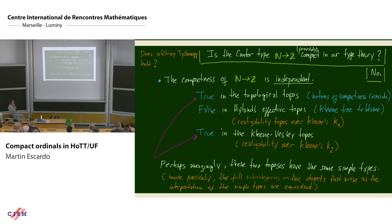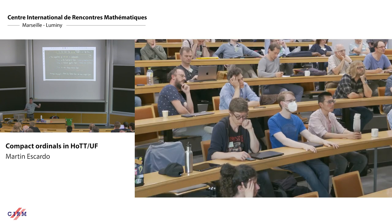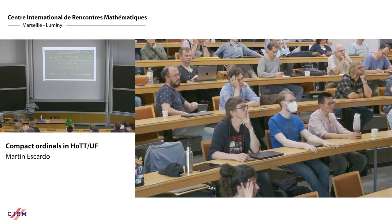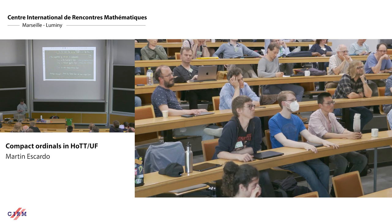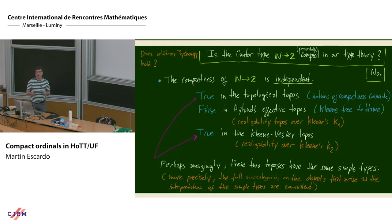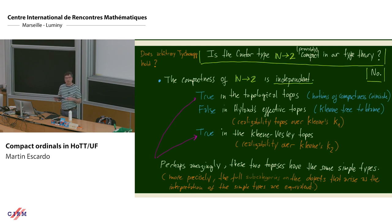As a side remark: you can consider the simple types in the realizability topos over K2 or over the topological topos — one built out of topology, the other out of computation — but the categories of simple types of these two toposes are equivalent. I consider this some kind of magic, but there is an explanation: a paper by John Longley called 'On the Ubiquity of Certain Type Structures' shows that in lots of categories if you construct the simple types you end up with the same thing — the Kleene-Kreisel continuous functionals.